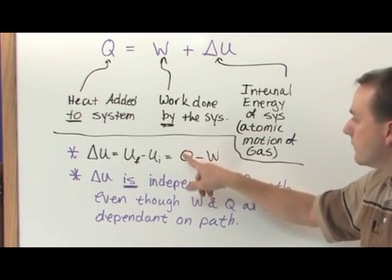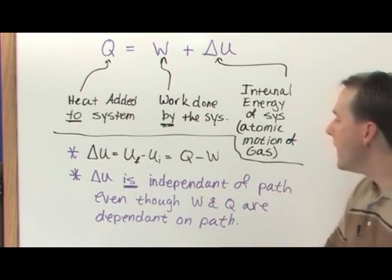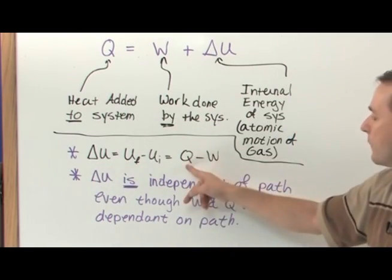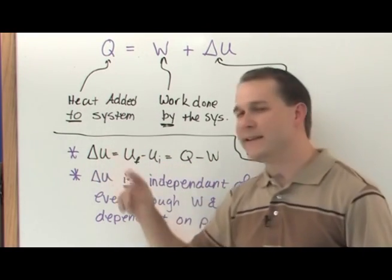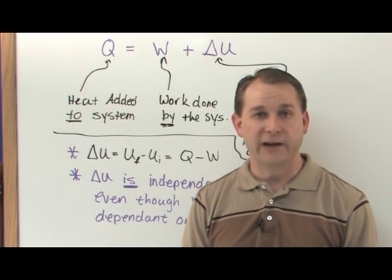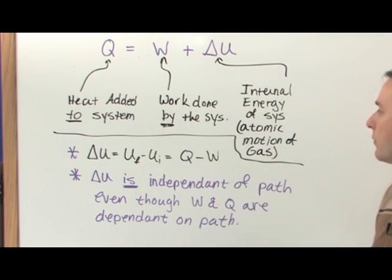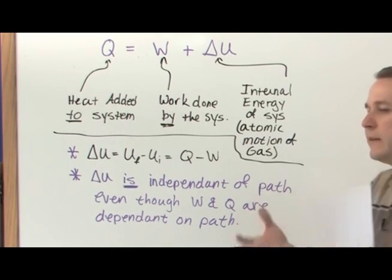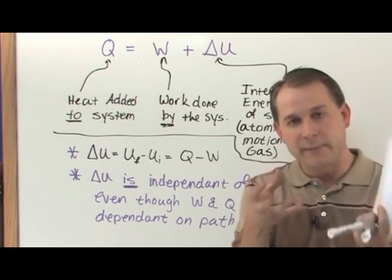So when you take path A, you'll get some number for Q and some number for W. You'll subtract them and you'll get a number. And then you'll go through a different path. You'll get a different number for Q and a different number for W, but you'll subtract them and you'll get exactly the same internal energy change that you had before. And the reason is because these guys are not state variables of the system. That means they're not intrinsically describing the state of the actual gas and the molecular dynamics of what's going on, whereas this one is.